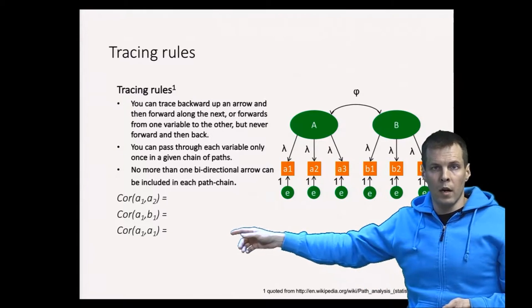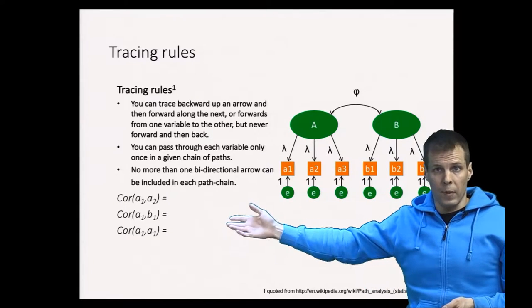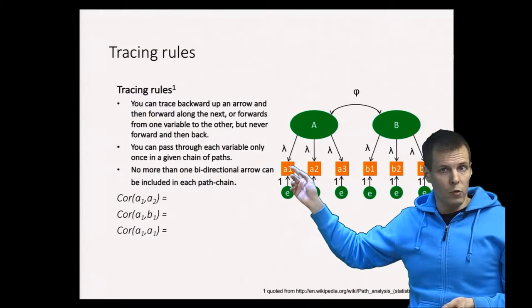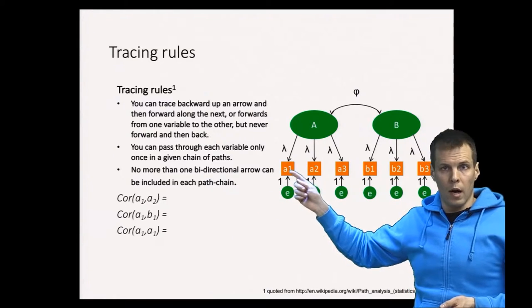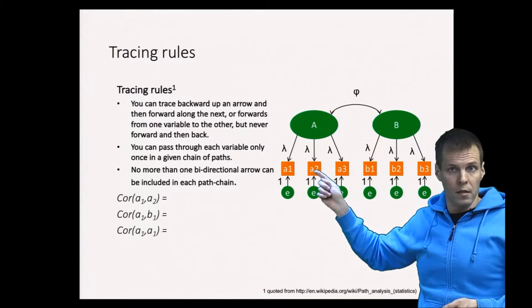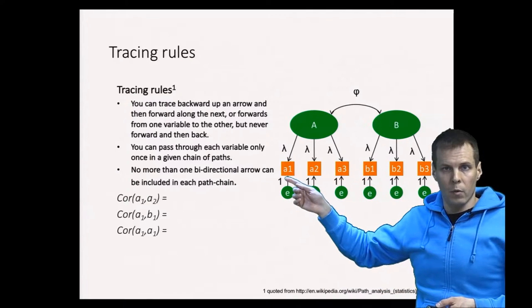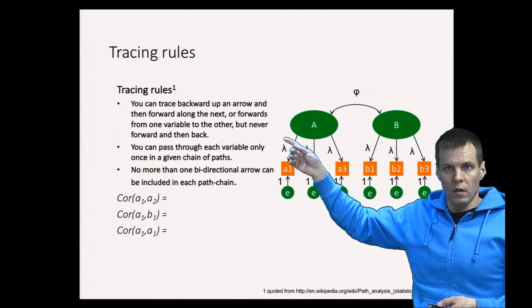The correlation between a1 and a2 is whatever different paths we can go from a1 to a2. We can go up here and then down—that's one path, and there are no other paths from a1 to a2.